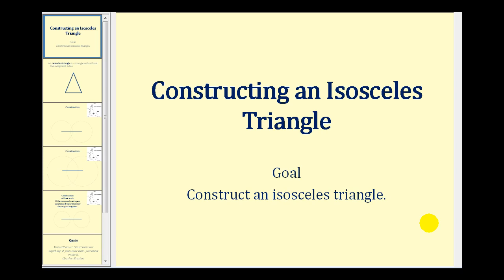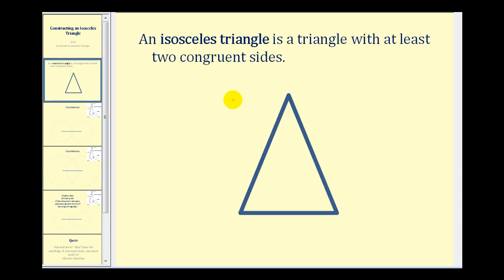Welcome to a lesson on constructing an isosceles triangle. Let's first review the definition of an isosceles triangle. An isosceles triangle is a triangle with at least two congruent sides. So looking at this triangle here, this would be an isosceles triangle if two or more sides are congruent.